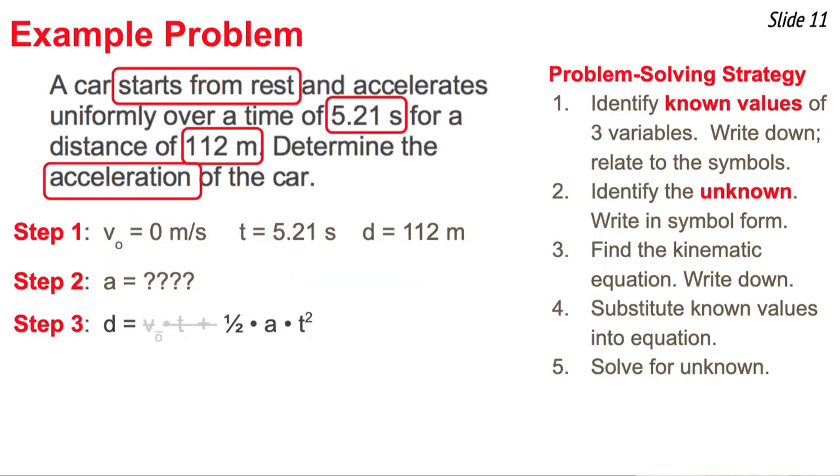Now I get to step four, where I substitute known values into the equation. And one thing that I notice is that the original velocity is zero. So that means that that term that goes v_o times t is actually going to cancel out. And the equation is going to simplify to d equal one half a times t squared. So I take my value for d, and I take my value for t, and I substitute it into the equation.